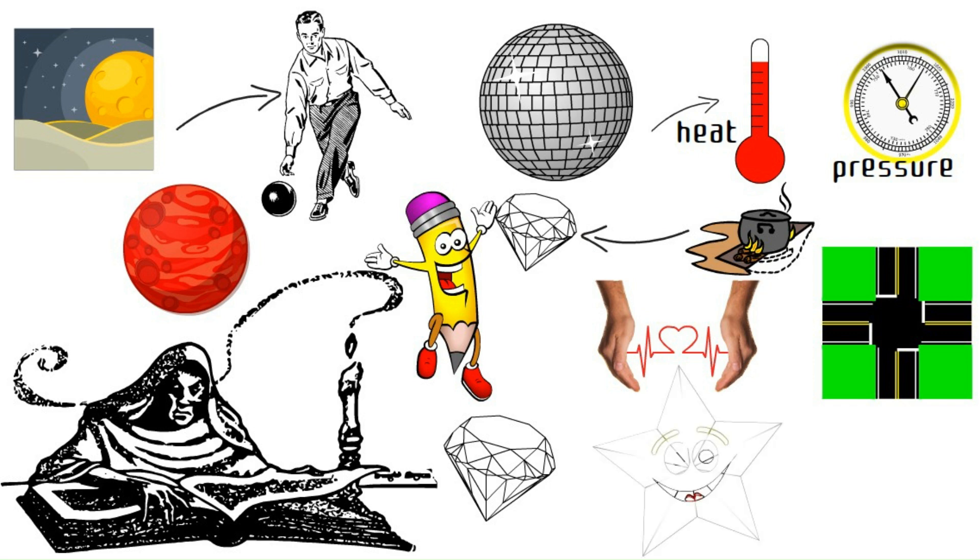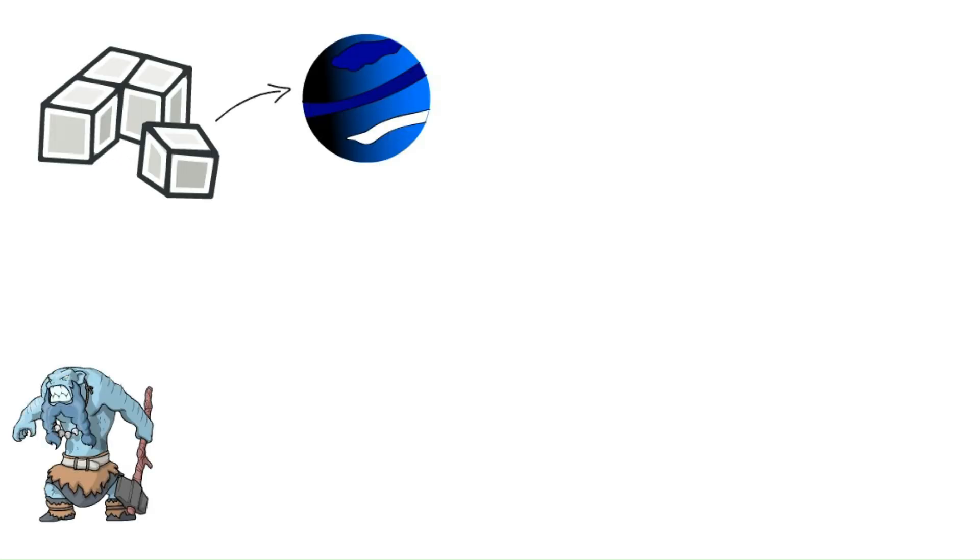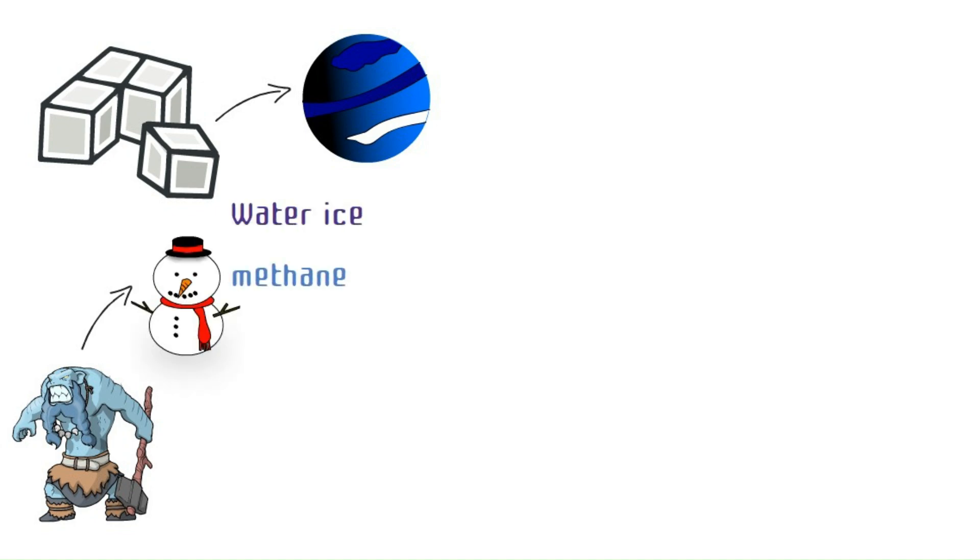Ice planets, snowballs with secrets. Time to trade heat for ice cubes. Enter the ice planets. These frozen giants are cosmic snowballs, with surfaces of water ice, methane, and ammonia. Imagine a giant comet, but way too big for a slingshot.